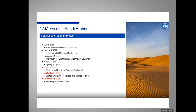Saudi Arabia is implementing their ROHS regulation in phases. Currently they have implemented small and large household appliances, information technology equipment, and lighting. Coming up later this year, they will add tools and equipment, games and entertainment devices, and sports equipment. In December, monitoring and control tools will be added. You can expect them to continue adding categories every few months.